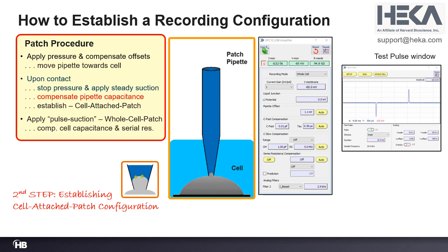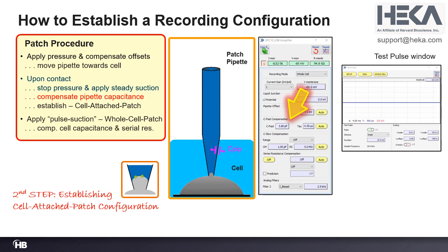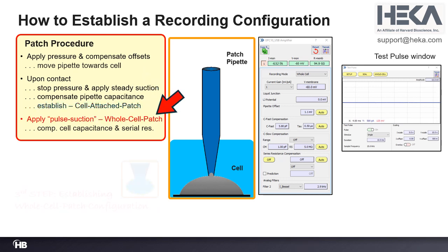Now compensate the pipette capacitance. Physically, the pipette capacitance is located at the pipette. Electrically, you see the pipette capacitance in the test pulse as two deflections. To compensate them, press the second auto button — this compensates the deflections and displays the amount of compensation and the value of the pipette capacitance. This establishes the cell-attached patch configuration. Now you could do single channel recordings, but most people go further and try to establish the whole-cell patch configuration.